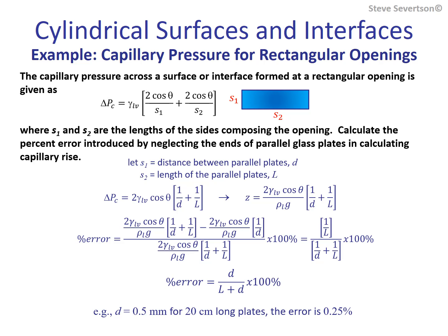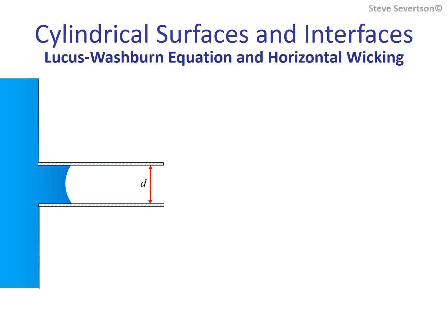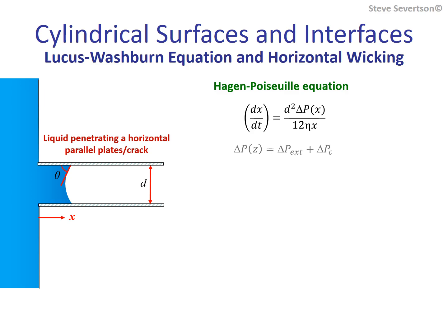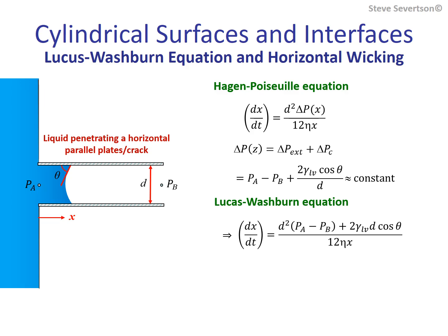Here, a pair of parallel plates separated by a distance d are placed horizontally into a liquid bath. The liquid has a contact angle of theta on the surfaces of the plates. The x-axis measures the distance the liquid moves through the opening between the plates—this could be considered a model for a capillary crack. We apply the Hagen-Poiseuille equation, where delta P is measured as the difference in pressures acting at the ends of the plates. Assuming contact angle less than 90 degrees, we substitute the capillary pressure into the pressure gradient to obtain the Lucas-Washburn equation for parallel plates.